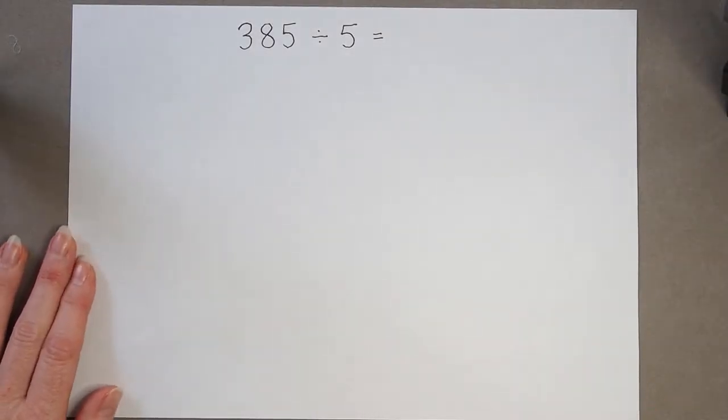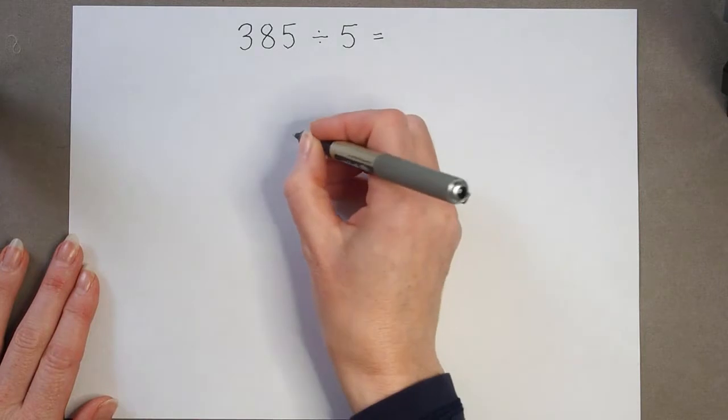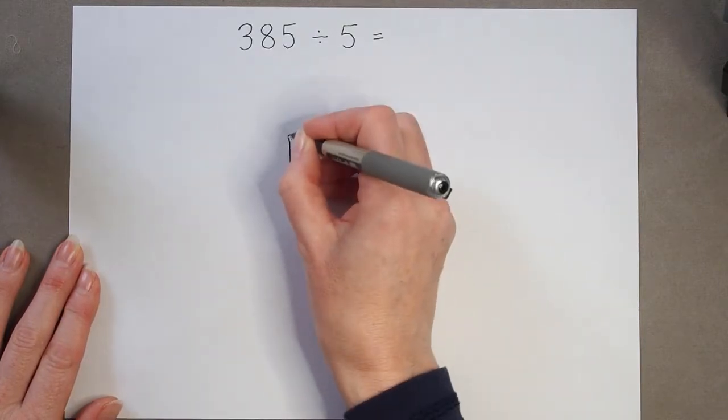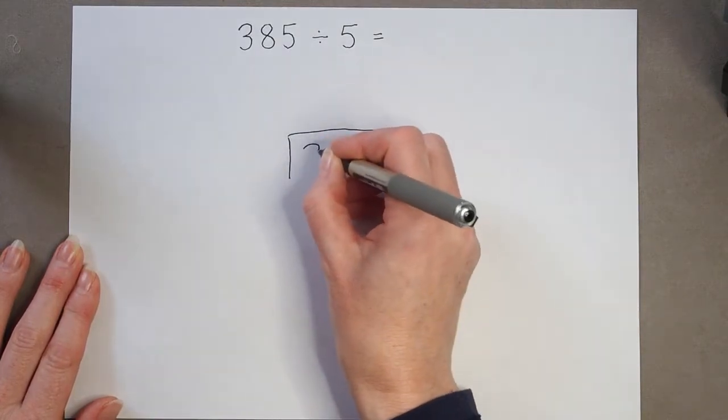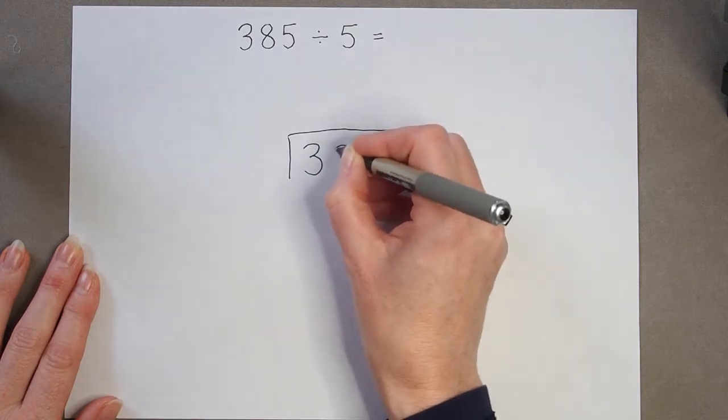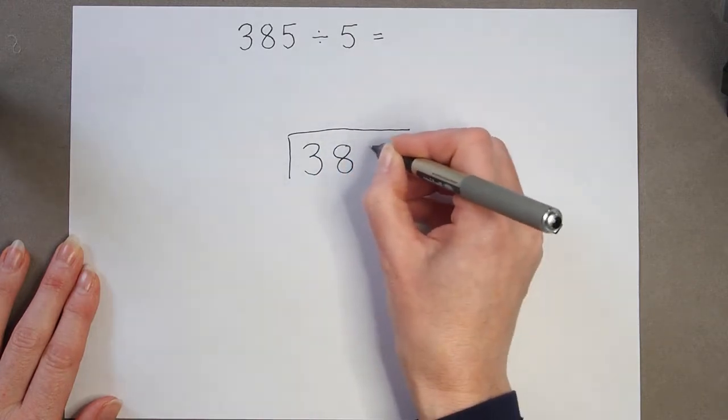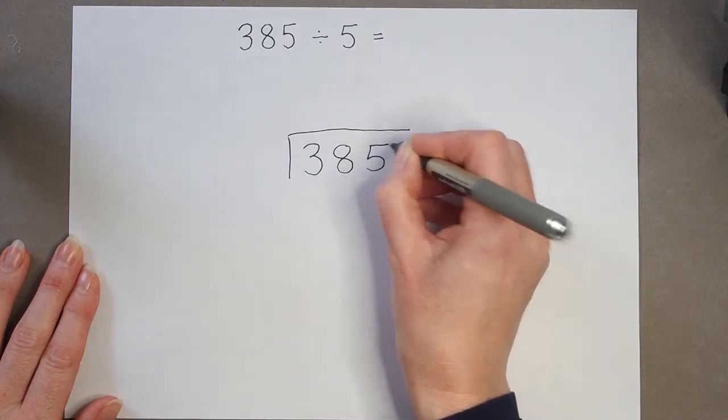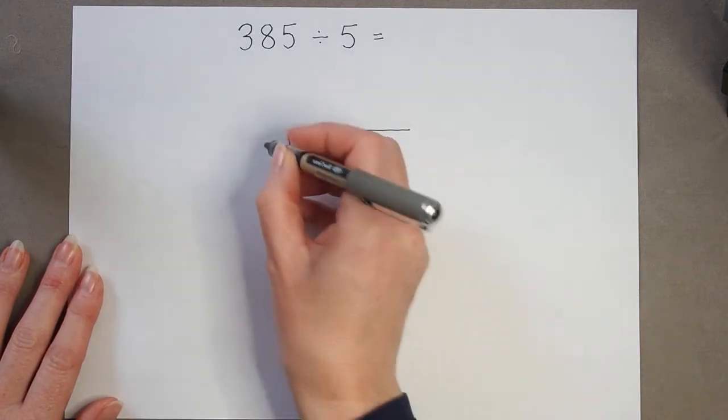OK, this calculation, we just need to be careful at the beginning. So I'm going to write my first number in the box again. 385. And I'm dividing by 5.